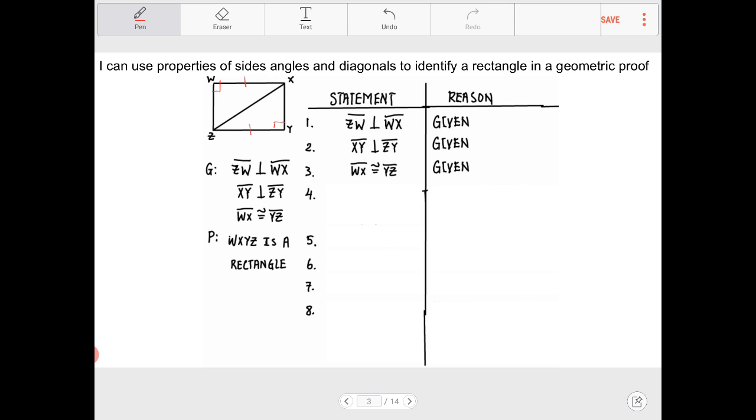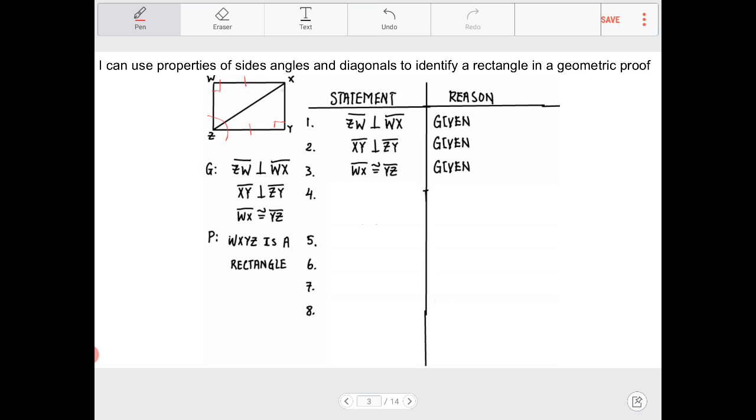Because even though I have the two right angles there, we do not have enough information to suggest that opposite angles are congruent because we know nothing about these angles over here whether or not they are the same.